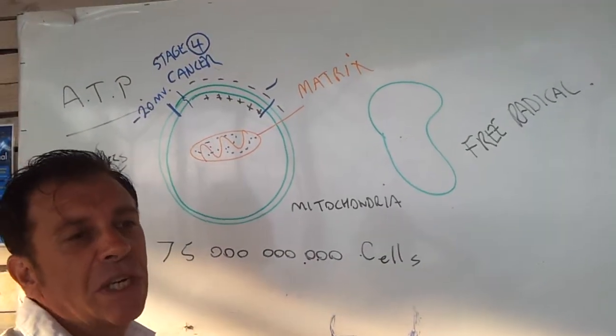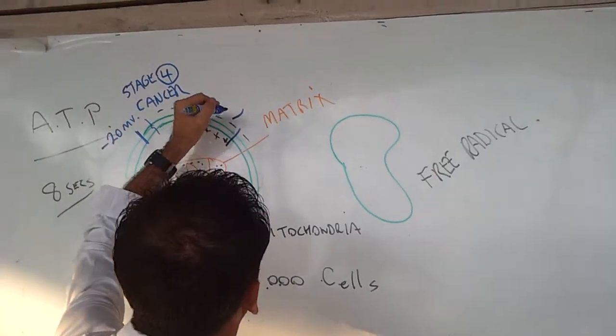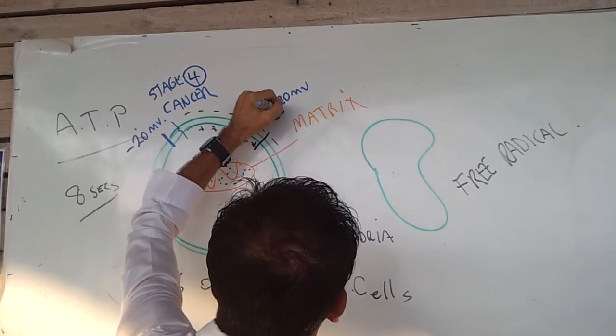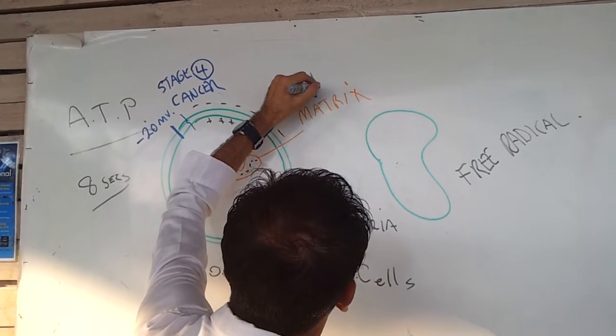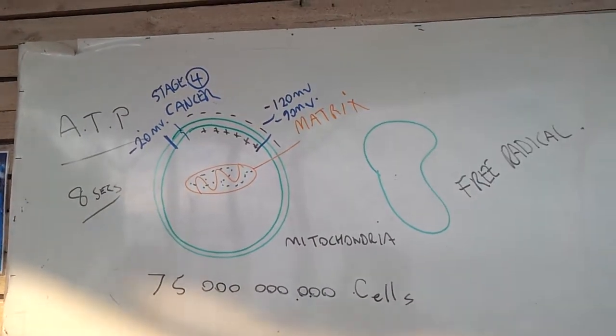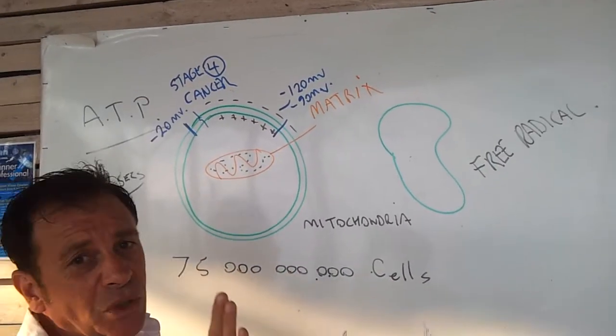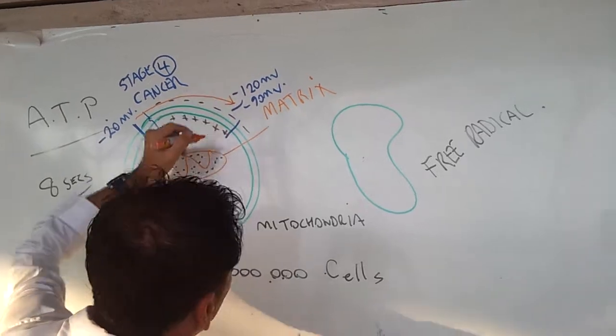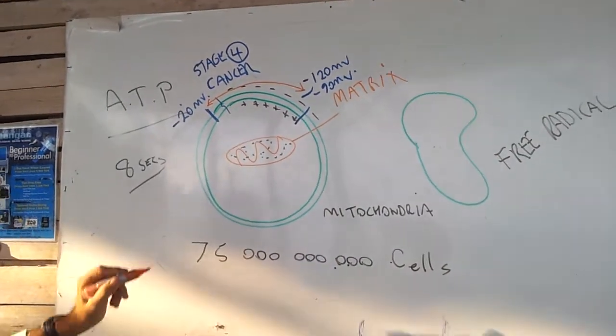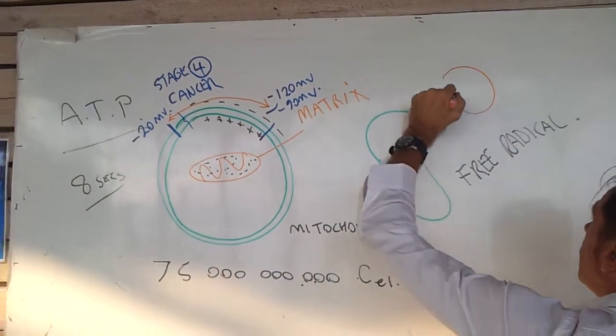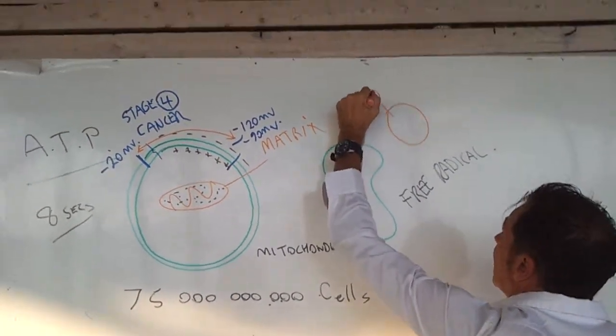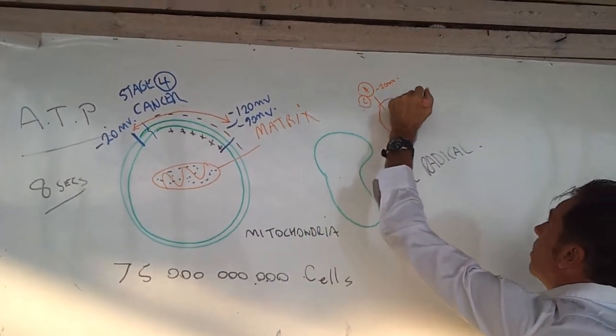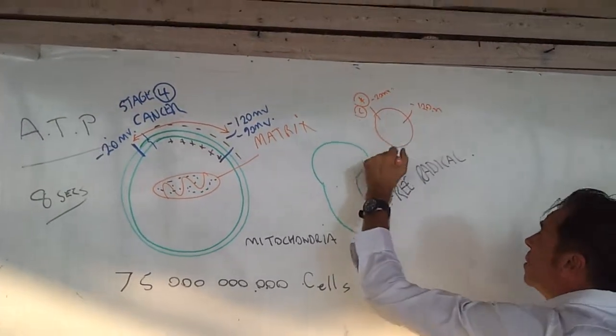This electrode potential can be measured here. Now, a super healthy person, super super healthy, which would be rare today, maybe 30 years ago a 12 year old might have this sort of reading in a clean unpolluted planet, it's minus 120 millivolts to say minus 190 millivolts. So what we're showing here is pretty important. I'm talking electricity, volts, millivolts. We have stage 4 at minus 20 millivolts and super healthy at minus 120 millivolts. This is what I call your life meter.